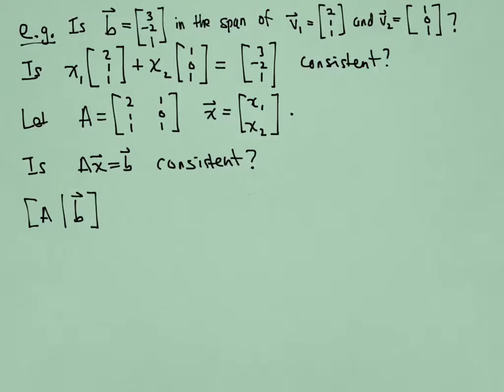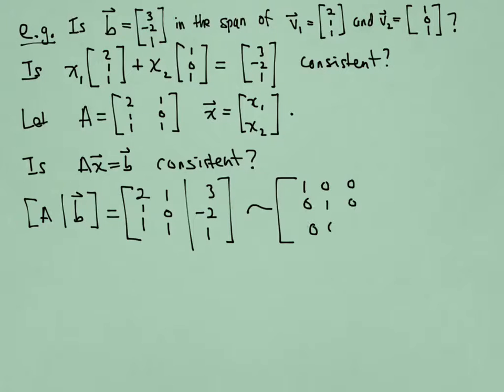So we look at the augmented matrix that goes with it. I'm going to put the columns down there as they appear. And then we'll do the row reduction. I did it ahead of time. And what happens is I get the matrix with 1, 0, 0, 0, 1, 1, and 0, 0, 1 in each row.